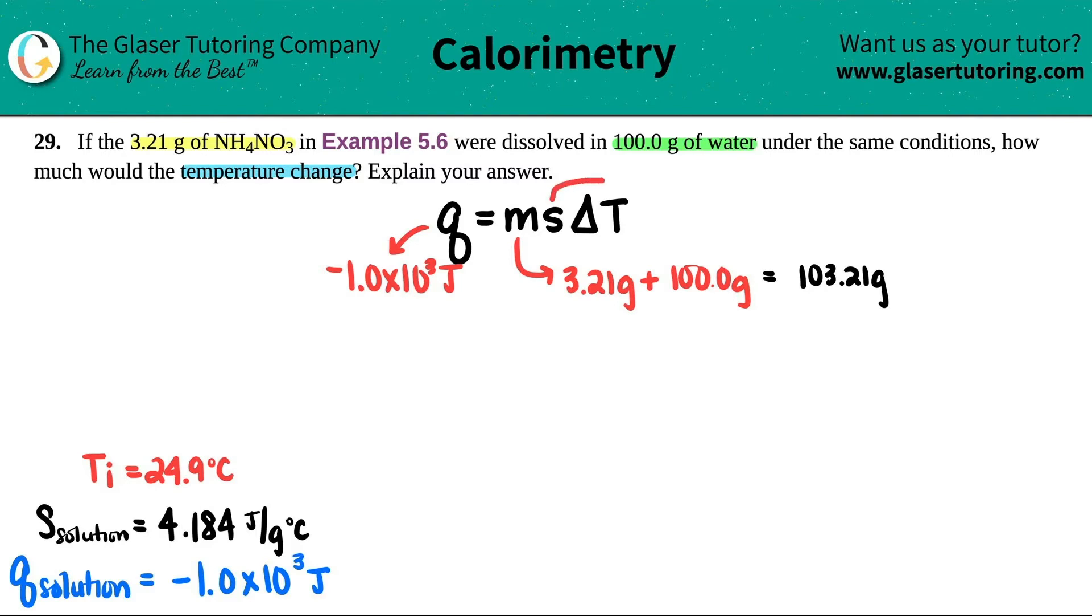They told us that the specific heat of the solution is 4.184. This was back in example 5.6. So we're going to use the same conditions for that. And basically, what we have to solve is how much would that temperature change? So we want to see what the delta T is. So I'm going to solve for this.